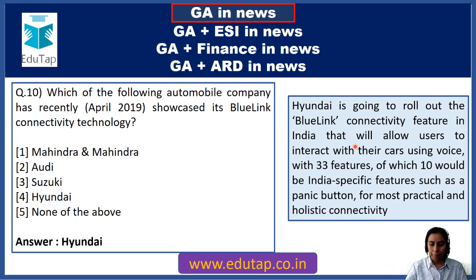Question 27: Which of the following has become the world's most profitable company for the year 2018? As per the survey, Saudi Aramco, based in Saudi Arabia, has become the world's most profitable company. Earlier Apple Inc held that position, but this year it has been replaced by Saudi Aramco.